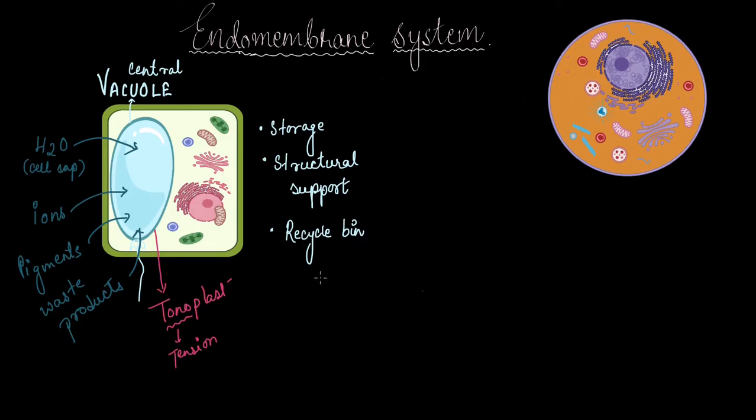And also just like lysosomes, this central vacuole is also originated from the Golgi body. The vesicles that detach from the Golgi, they do not leave the cell and grow this big when it comes to plant cells, and we call them the central vacuole.